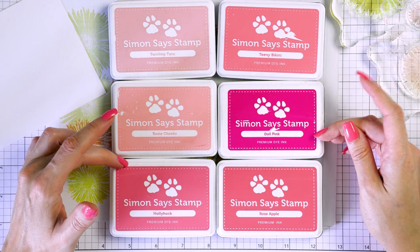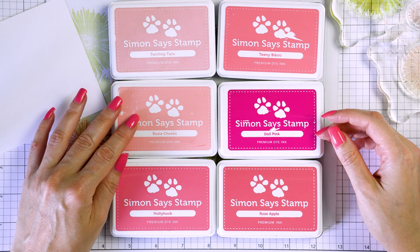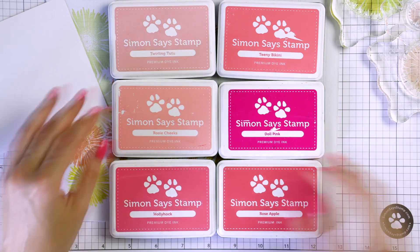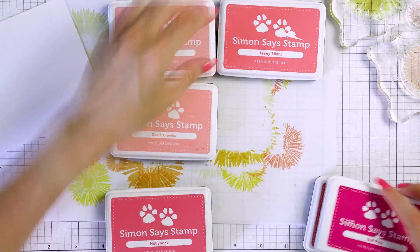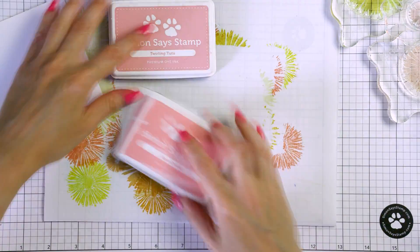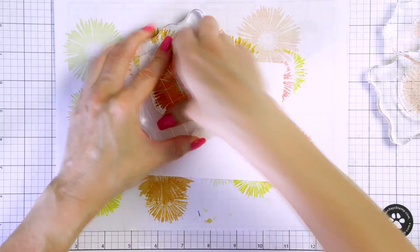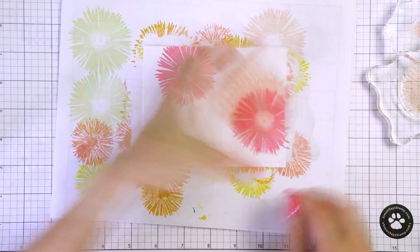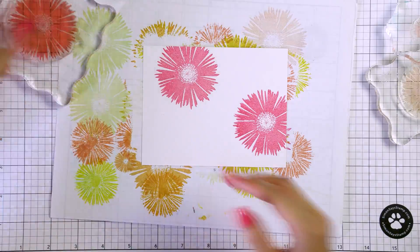I also stamped one more pattern using pinks. I used rose apple, doll pink, teeny bikini, twirling tutu and hollyhock ink colors. I did plan to use the rosy cheeks color but ended up not using it as it seemed too light for this pattern. But like I said, you can go as light or as dark as you like.